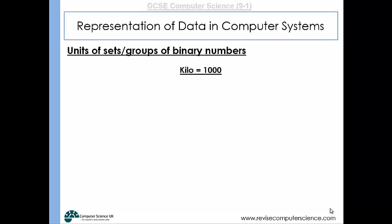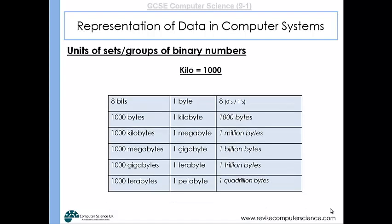Let's have a look now at units of groups of binary numbers. If we think about our number system, we know that a kilo means a thousand. It's exactly the same in binary. Once we've got our eight bits and we've produced a byte, the next unit we would use to group bytes by would be a thousand. So one thousand bytes is a kilobyte. One megabyte is a thousand kilobytes, that's a million bytes. A gigabyte is one thousand megabytes, so that's one billion bytes. A terabyte is one thousand gigabytes, that's one trillion bytes, and so on.